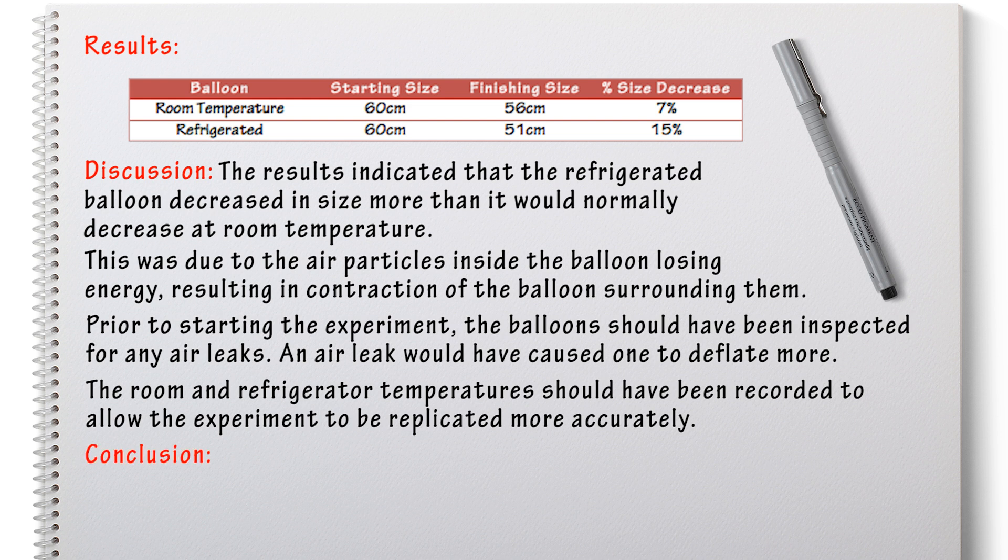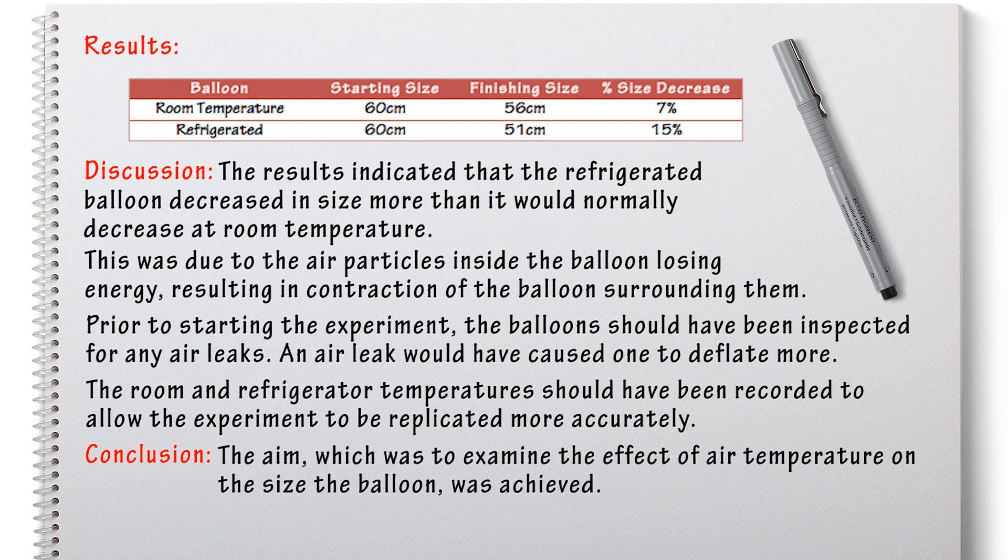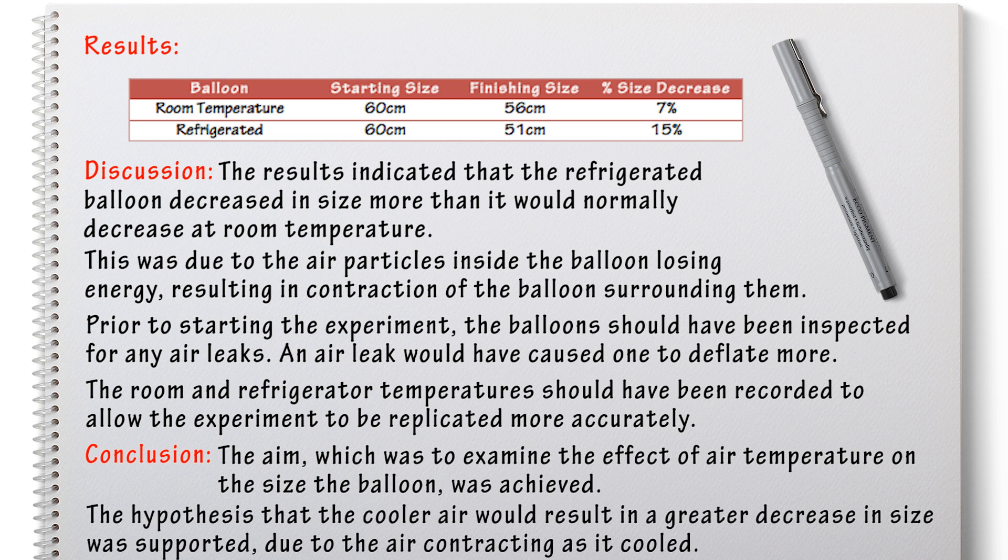Lastly we have our conclusion and with my students I generally expect them to restate what the aim was and say whether that was achieved and why and also restate what their hypothesis was, what they expected to happen and whether that actually happened and why. And sometimes only part of the hypothesis is supported and so then you can say the hypothesis which was blah blah blah was partially supported and then you would go on to elaborate why that's the case.